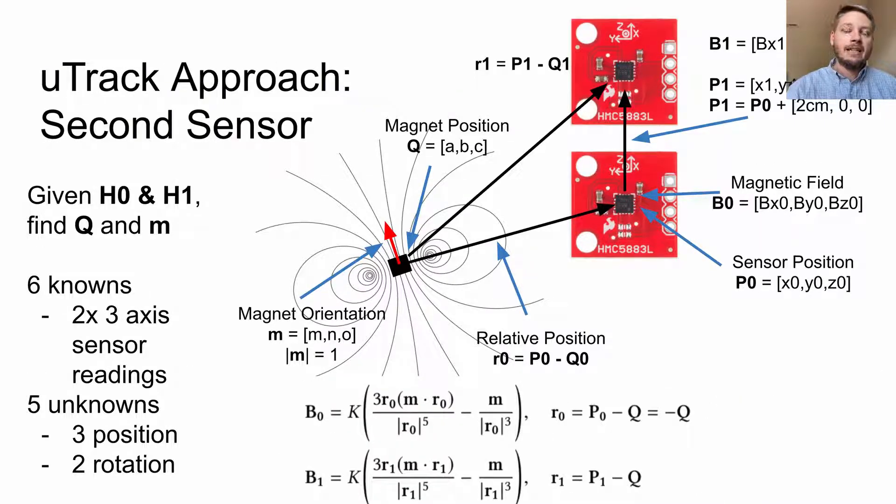For uTrack, they added a second sensor. So now we have six magnetic field readings and only five unknowns: three for position and two for rotation. The equations here are a much more direct formulation of that work.